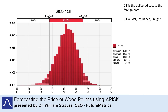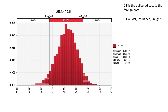If we put all this together and ask what's the 2030 delivered price, this is what we get. We get a mean of about $224, but we have a standard deviation of around $17.50. So this gives some guidance as to what could be the future pricing.